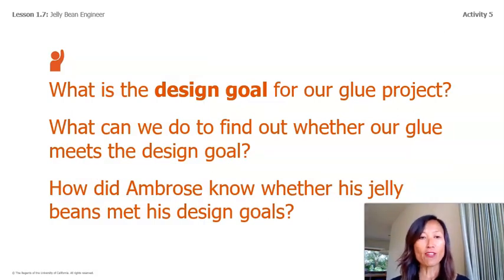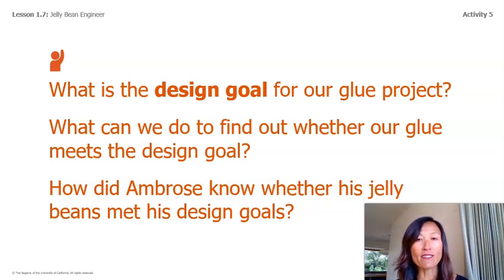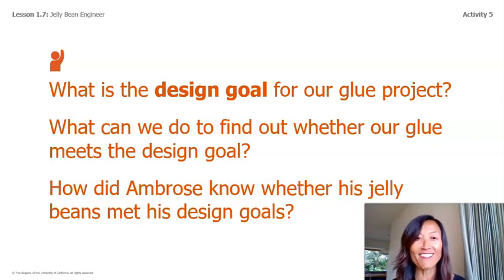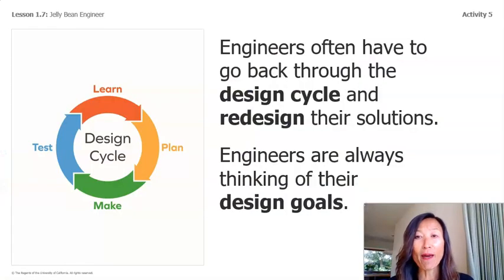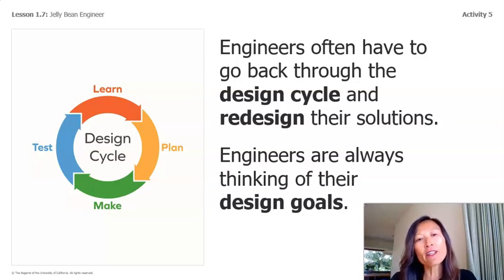What is the design goal for our glue project? The glue must be sticky. What can we do to find out whether our glue meets the design goal? We need to try different types of sticky tests. How did Ambrose know whether his jelly beans met his design goals? He tested them. The key concept: engineers test their designs to find out whether they meet their design goals. Engineers often have to go back through the design cycle and redesign. Next lesson, we'll use the evidence we've gathered to write a plan for our glue. Hope you enjoyed reading 'Jelly Bean Engineer' — see you next time!